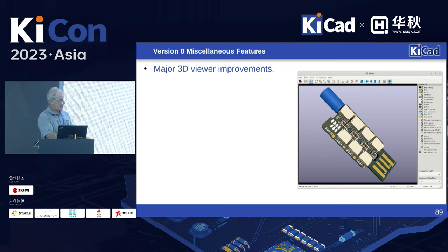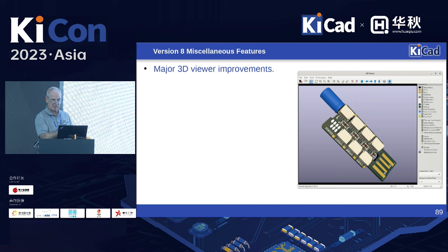Last but not least, we made quite a few changes to the 3D viewer. You can now turn items on and off in a panel on the right, save those views, give them names, and go back to a specific view. You can access those saved views from a panel as well, so next time you open it they'll still be there, giving you consistency in your 3D viewing experience.